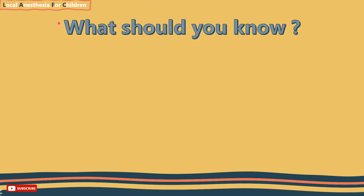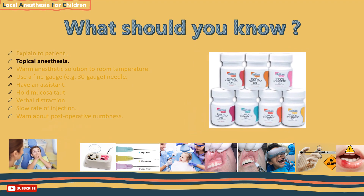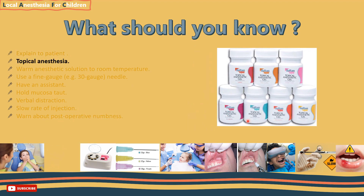Before we dive in, there are some general principles to consider before we apply local anaesthesia. Number one: you should always explain to the patient in terms that they will understand easily what you're trying to do and why you're doing it. Number two: use flavoured topical anaesthetic gel or spray — for example, 20% benzocaine — to reduce dental phobia and reassure the patient before needle penetration.